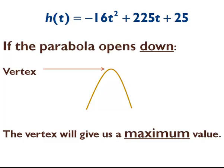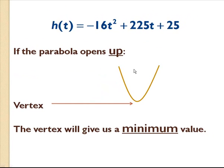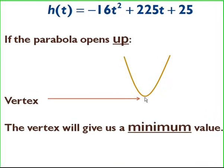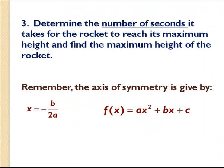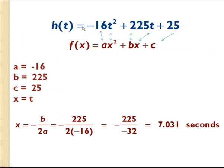If the parabola opens down, the vertex gives us the maximum value. This point has an x and y component: the x component is the axis of symmetry, and the y component tells you how high the rocket is, while the x tells you how long it took to reach that height. If the parabola opens upward, the vertex identifies the minimum point. The axis of symmetry is given by x equals negative b over 2a.